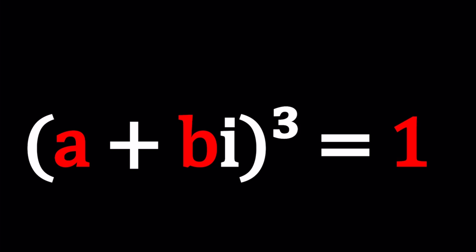So we have a plus bi to the third power equals one and we're going to try to solve for a and b values. In other words, we're going to find a complex number that satisfies this equation. We're going to be solving this problem in more than one way.